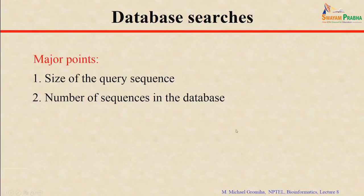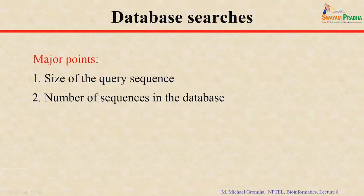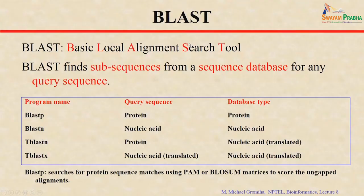When you find similar sequences, major points to consider are: the size of the sequence — if you have 100 residues versus 1000 residues, it will take more time — and the number of sequences in the database. The time depends on these two aspects. Considering all these aspects, one of the most widely applicable tools developed in the literature is BLAST.